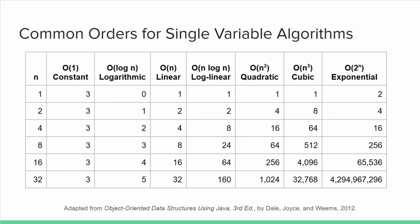In algorithms where work is affected by only one variable, like the size of a collection for example, common orders include Big-O(1), or constant, Big-O(log n), or logarithmic, Big-O(n), or linear, Big-O(n log n), or log linear, Big-O(n²), or quadratic, Big-O(n³), or cubic, and Big-O(2^n), or exponential.